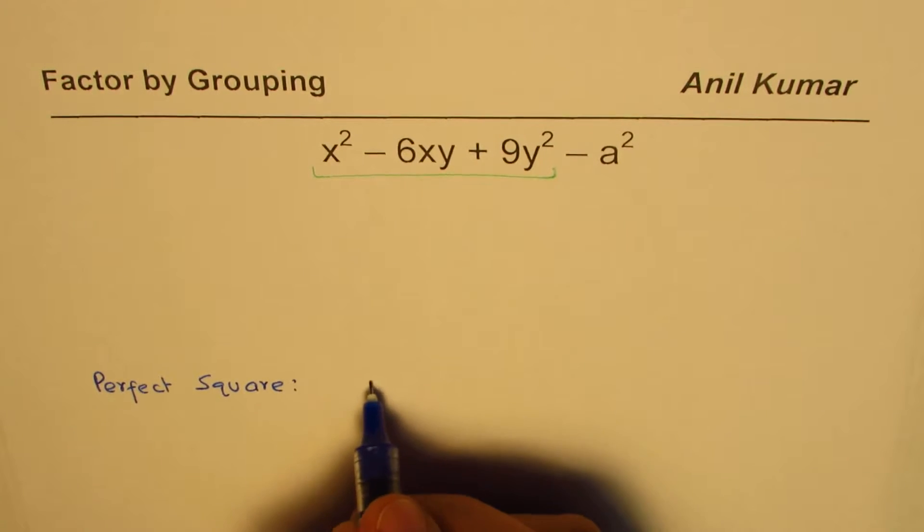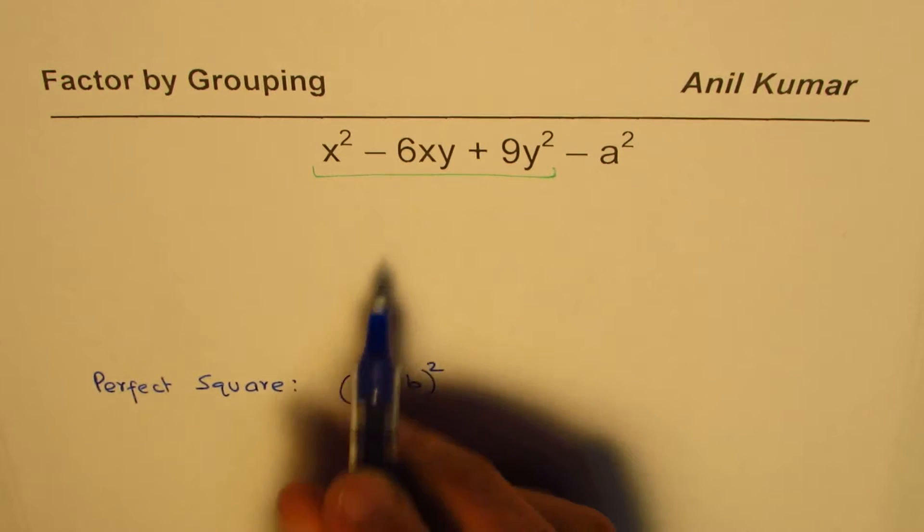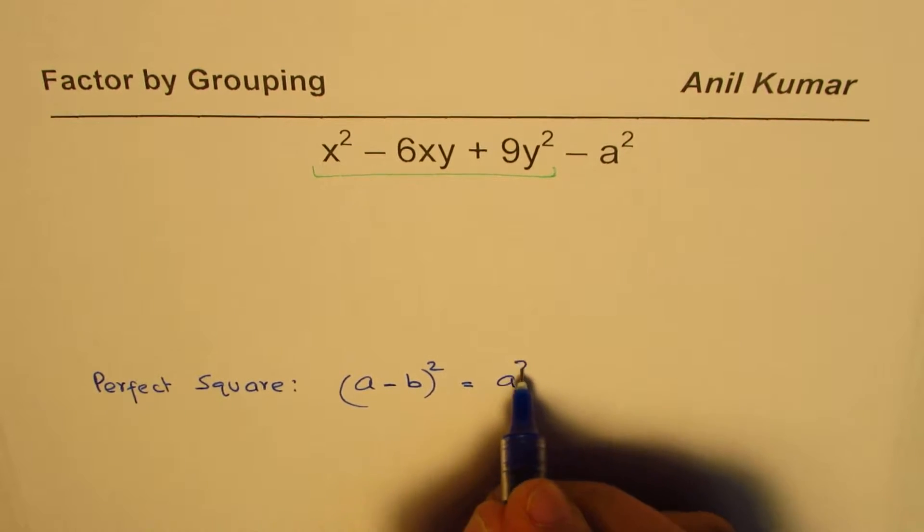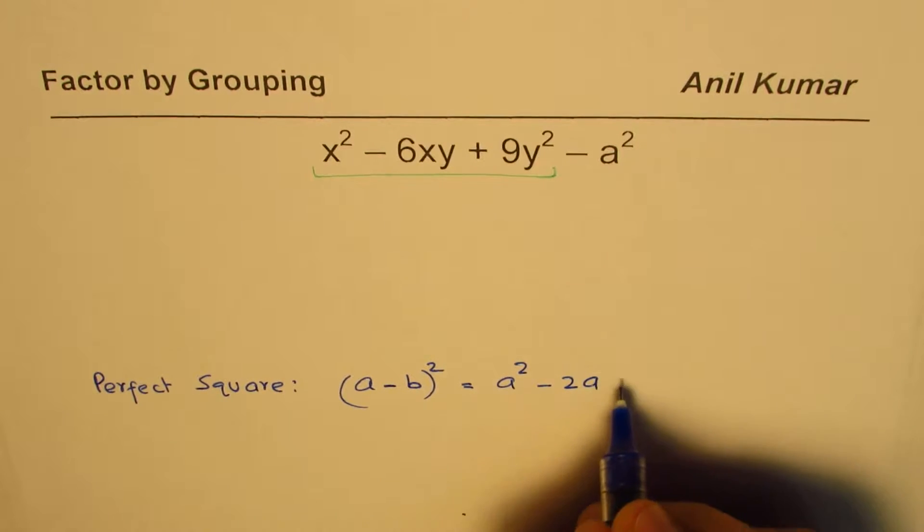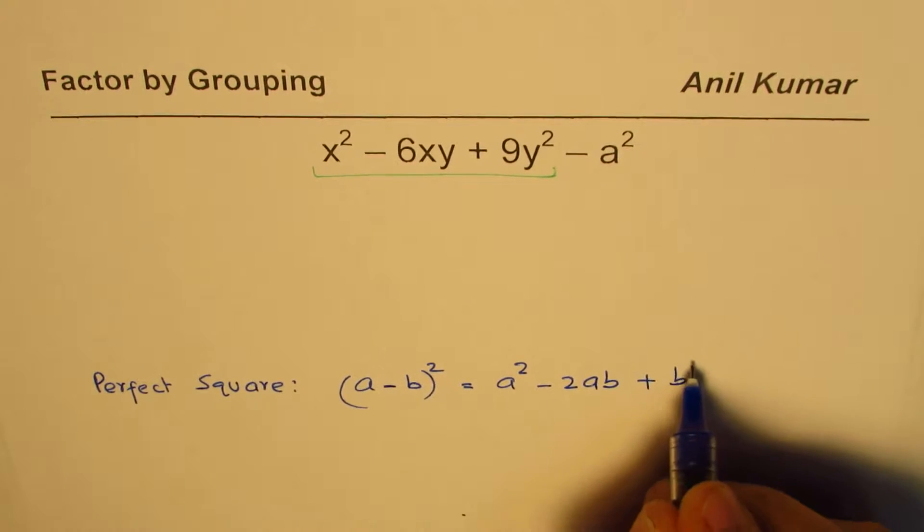Remember the formula for a perfect square: a minus b whole square. Since this is minus, I'm writing this formula, which is a squared minus 2ab plus b squared.